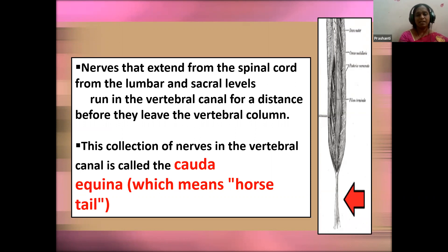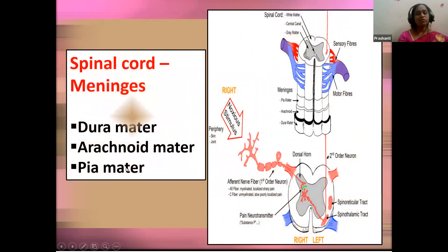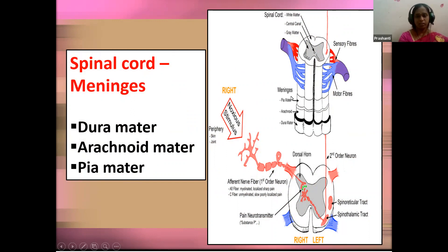At the inferior end, there is the conus medullaris — a cone-shaped part — and the cauda equina beyond the lower end of the spinal cord. The spinal cord has three protective connective tissue layers called meninges: the outer dura mater, which is a thick outermost layer; the middle arachnoid layer; and the innermost thin layer called the pia mater. These meninges protect the spinal cord, supply nutrients, and are continuous with the cranial meninges. Nerves coming out from the spinal cord are called spinal nerves.